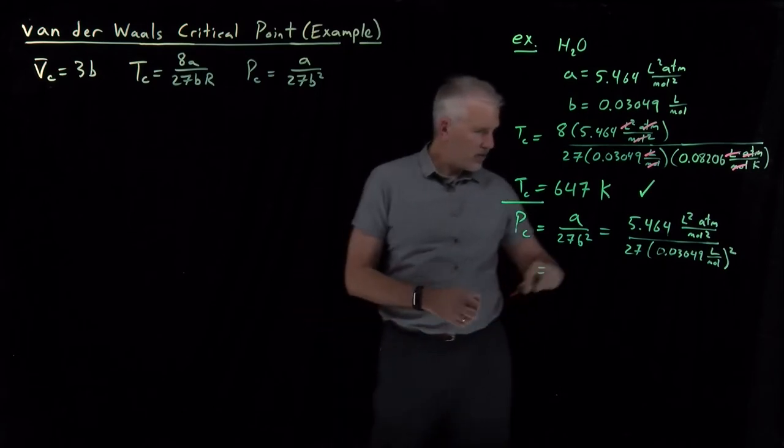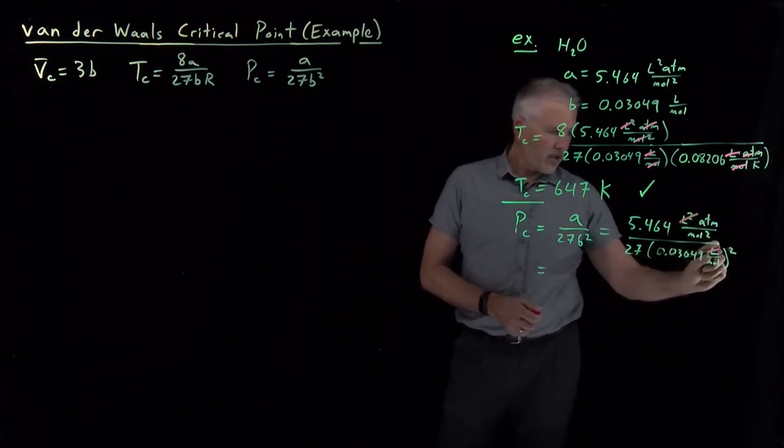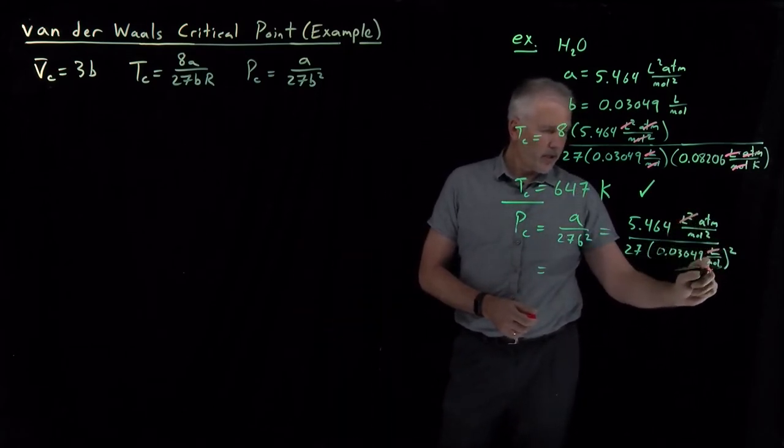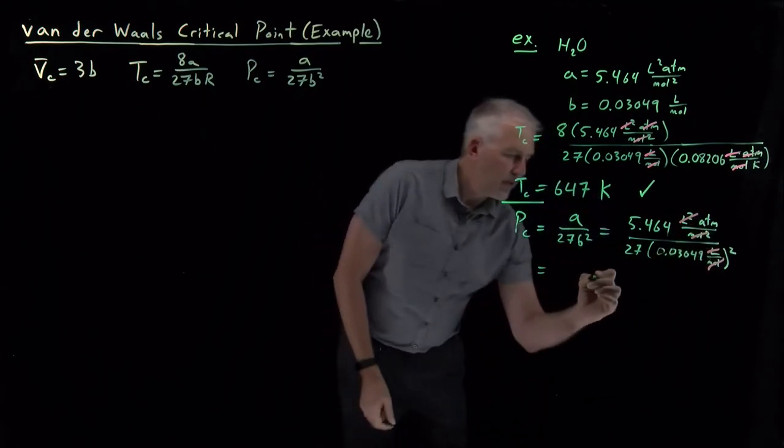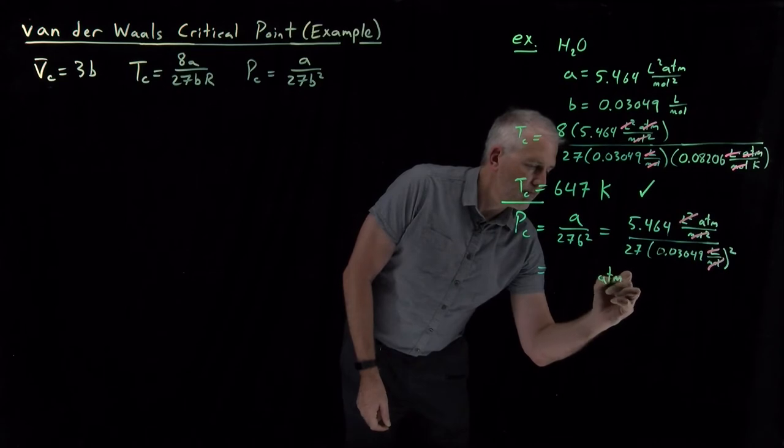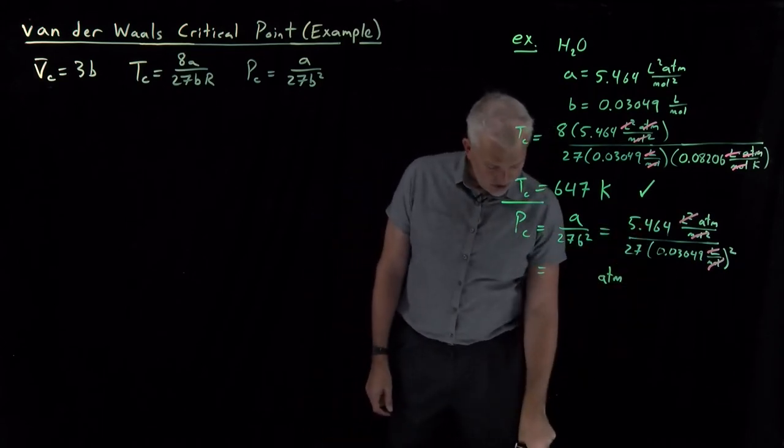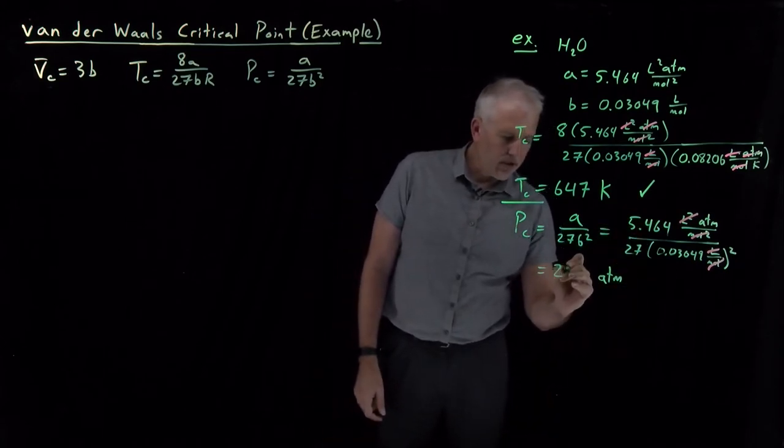27 times 0.03049 liters per mole, and that one is squared. That arithmetic, if our units work - I have a liter squared on both sides, I have a mole squared on both sides - that leaves me with just atmospheres. In atmospheres, this quotient works out to be 218.